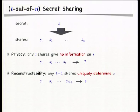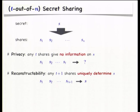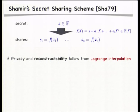With a secret sharing scheme, we can split a secret into n shares so that for some parameter t, any t of the shares give no information on the shared secret, and any t plus one of the shares uniquely determine the secret and optimally allow us to recover the secret efficiently. A well-known example is Shamir's secret sharing scheme where the shares are computed as polynomial evaluations of a polynomial of degree at most t with the secret as constant coefficient. Privacy and reconstructability follow immediately from Lagrange interpolation.